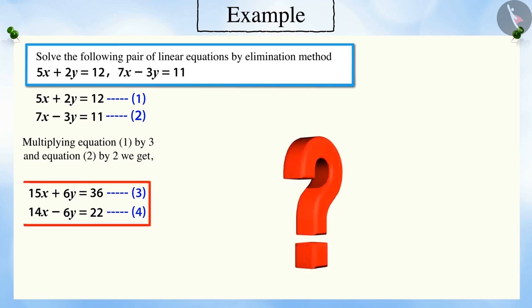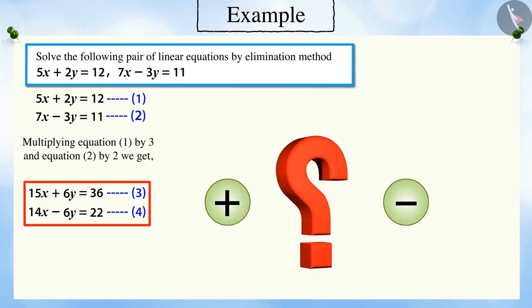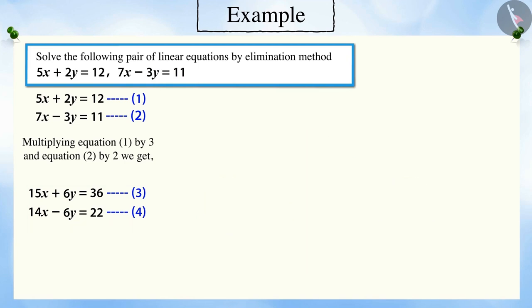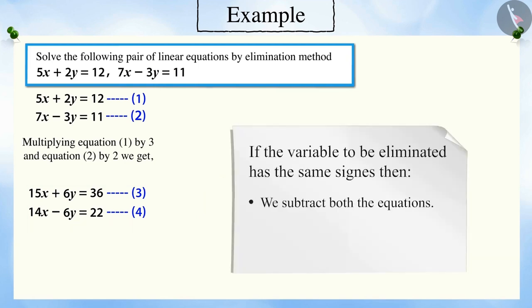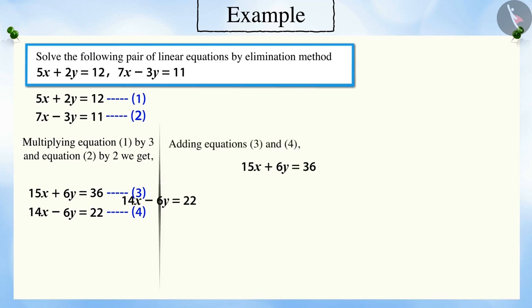Can you tell whether we need to add or subtract the equations to eliminate variable y? Very good. Since the variable to be eliminated has opposite signs, we will add both the equations. Adding equations 3 and 4, we get x is equal to 2.